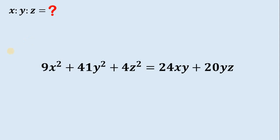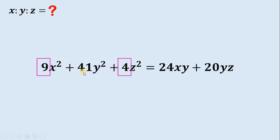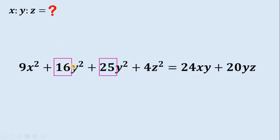The first thing is to notice that 9 is a perfect square, 4 is also a perfect square, but 41 is not a perfect square. However, 41 can be split into two perfect squares: 16 and 25. So, 41y squared can be written as 16y squared plus 25y squared, wherein 16 and 25 are all perfect squares. Now we have perfect squares 9, 16, 25, and 4.